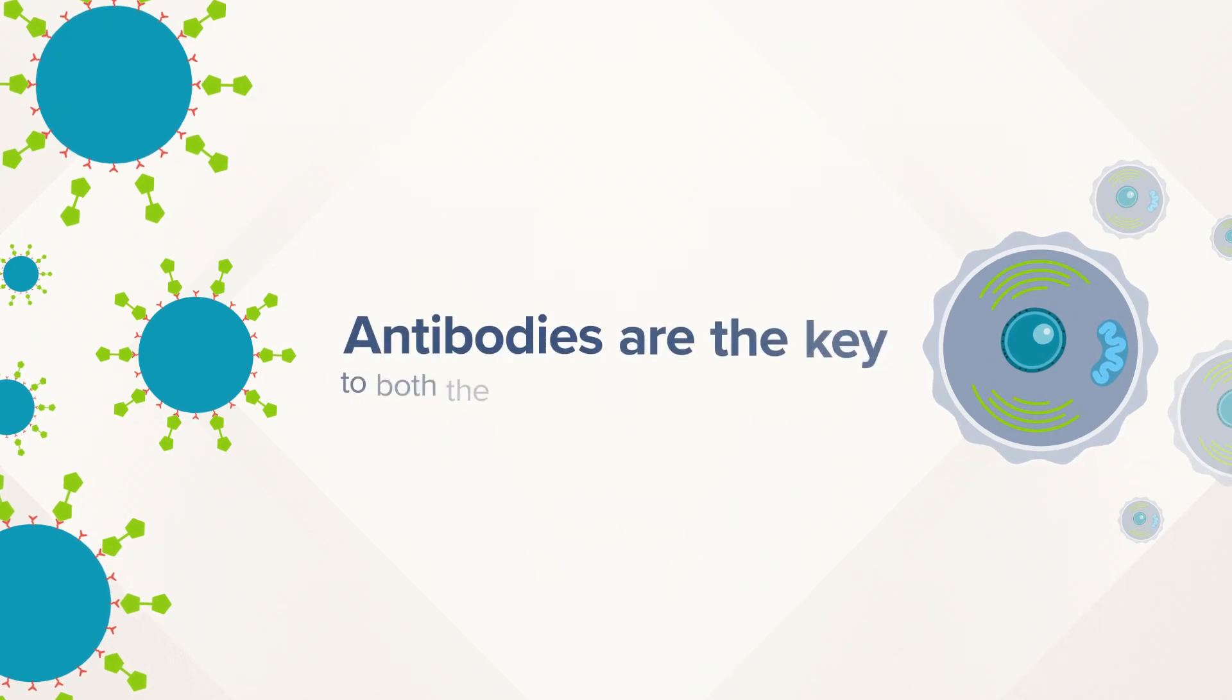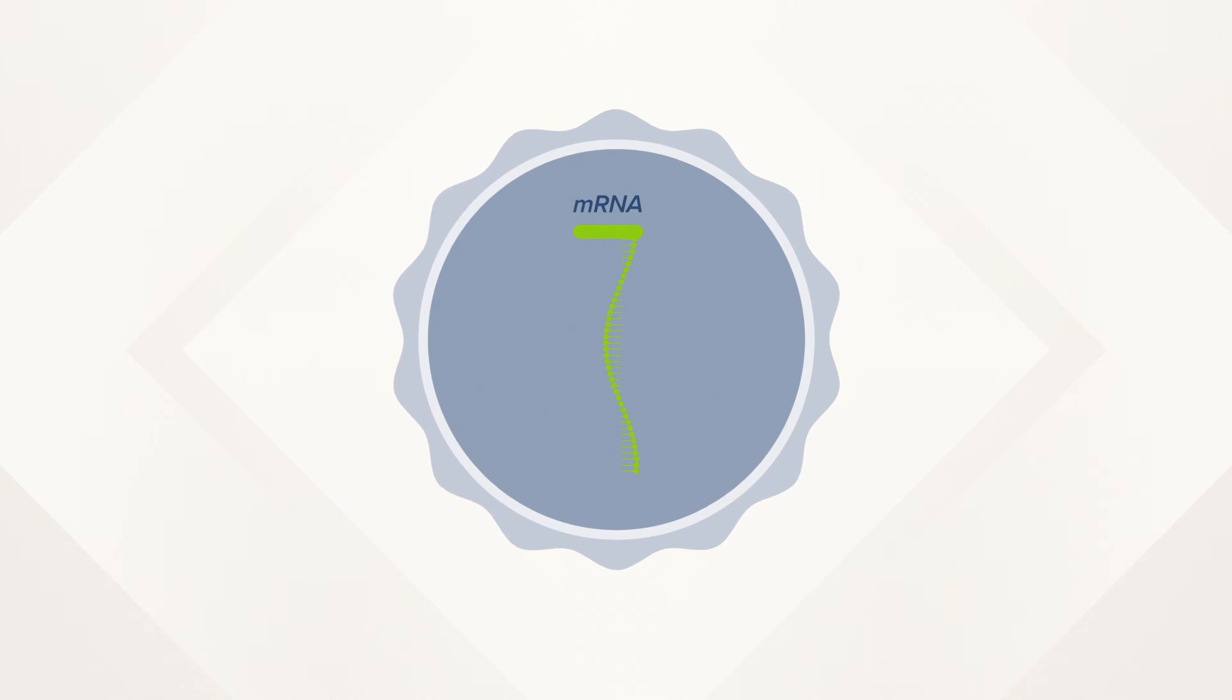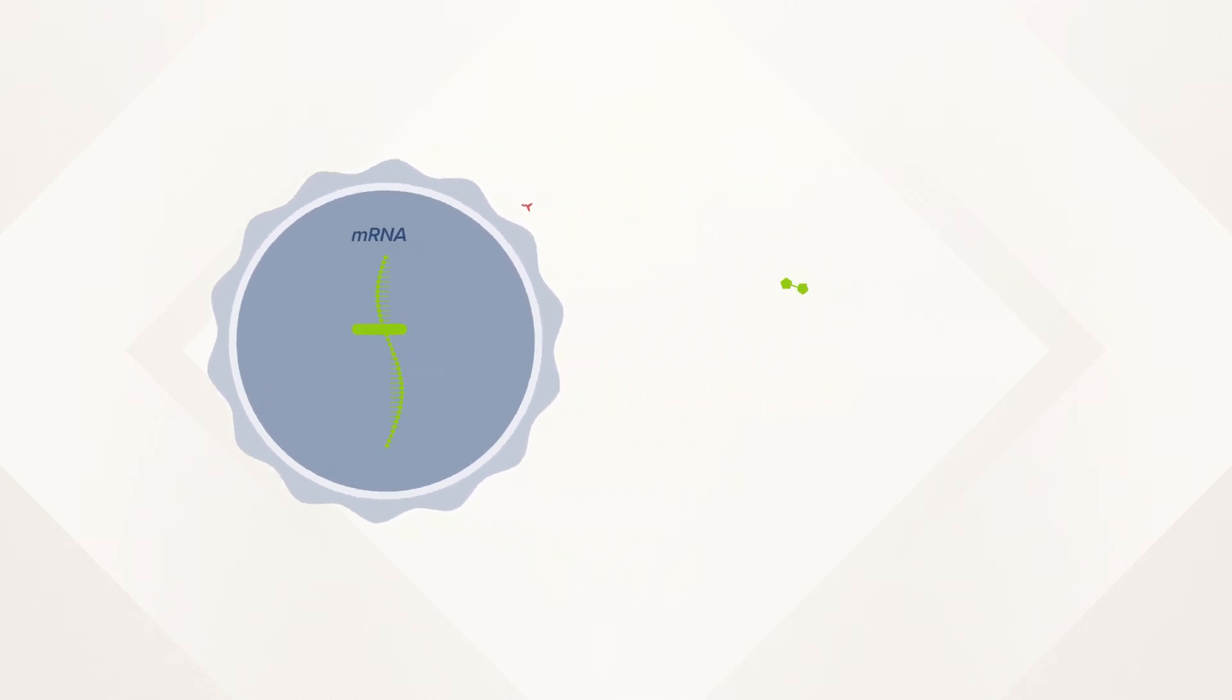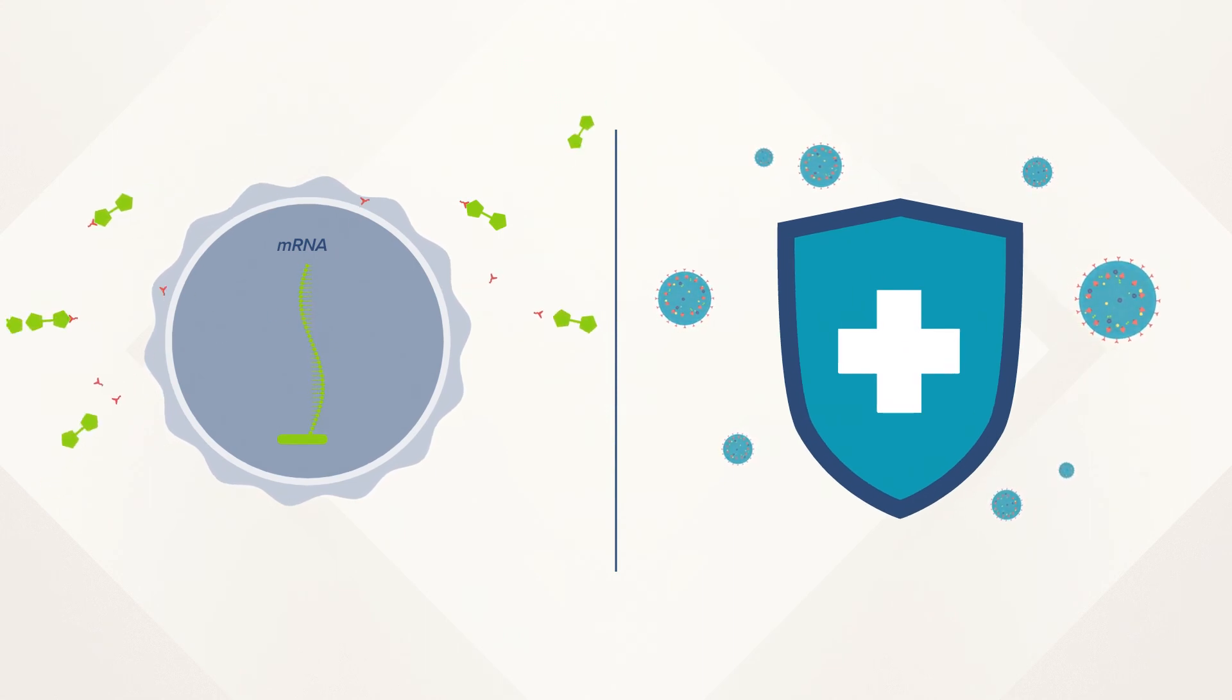And that's the key to both the Moderna and Pfizer vaccines. Each uses messenger RNA to construct the coronavirus spike protein. The immune system rushes in to defend against the protein, and you build immunity to the virus.